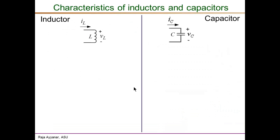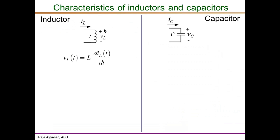Before we describe the volt-second balance principle, it's a good idea to have a quick review of the characteristics of inductors. Consider an inductor with assigned current direction iL and assigned voltage polarity vL. The voltage-current relationship is the well-known equation: the voltage across the inductor vL equals L times the rate of change of the inductor current, vL = L·diL/dt. This is valid only for the assigned current direction and voltage polarity — if either is reversed, there will be a minus sign.